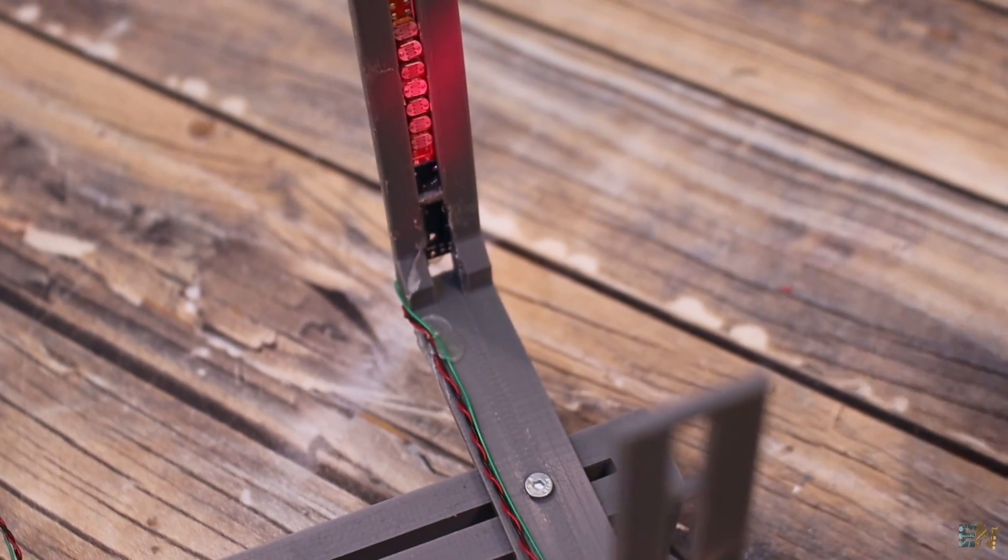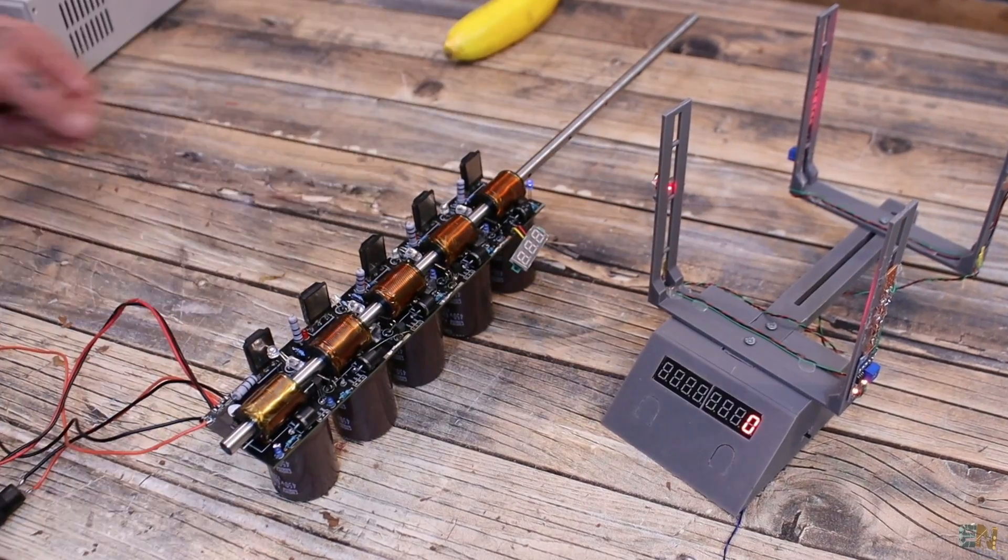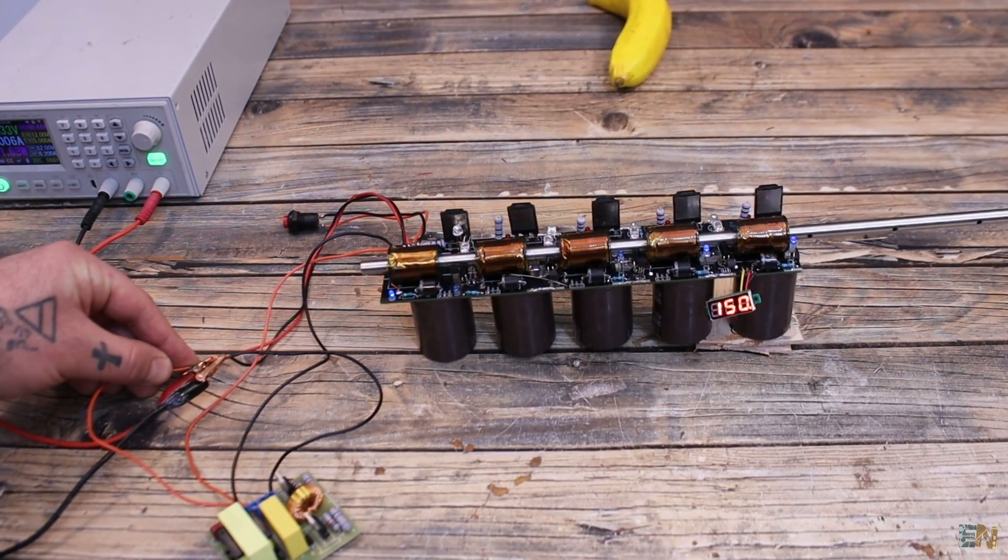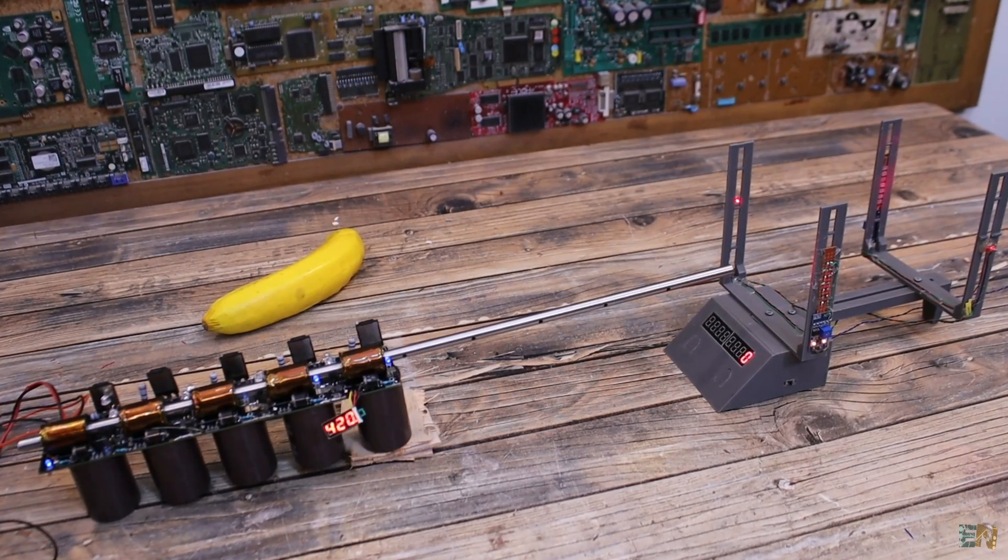So now let's test it with my coil gun from the other project. I power it on and charge the capacitors to above 400V. Make sure that the meter is reset and fire the bullet.